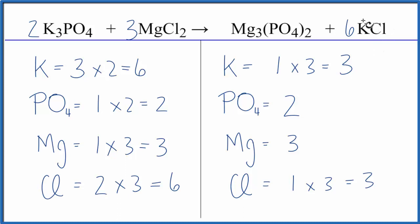And now let's update the potassiums and chlorines. So I have one times six, that's six potassiums, chlorines, one times six, six of those, and we're done. This equation is balanced.